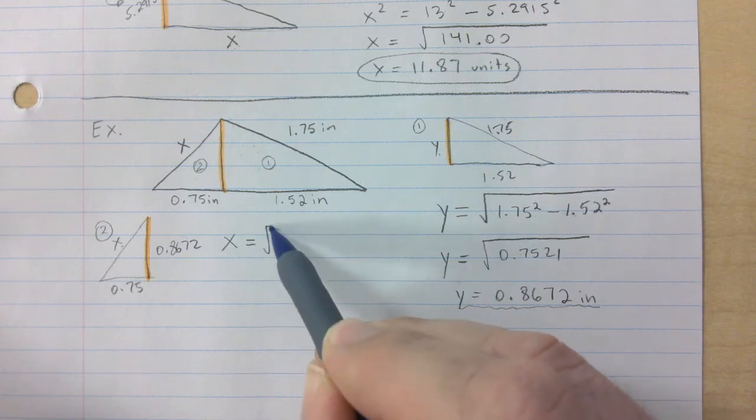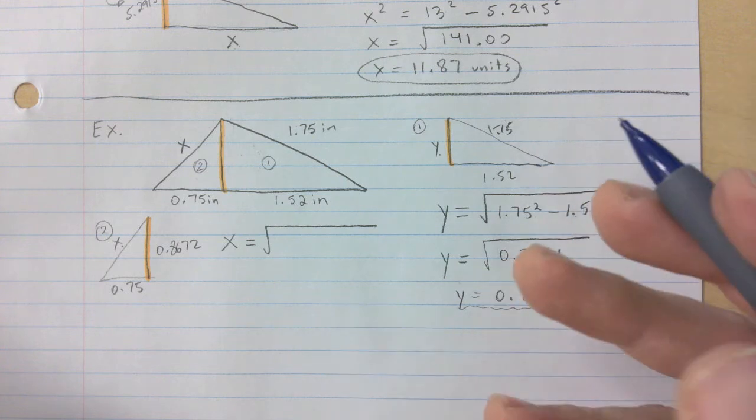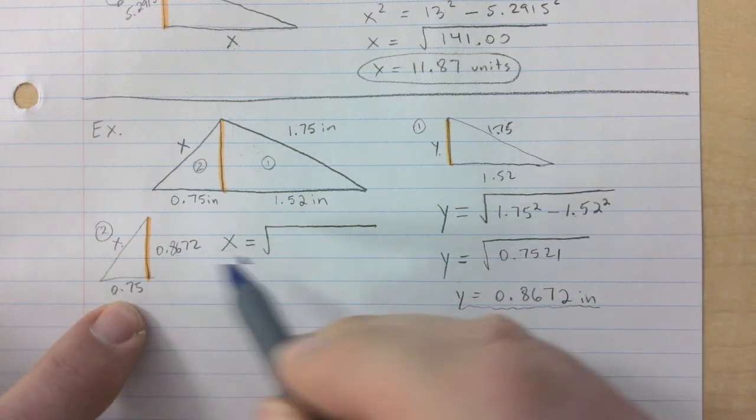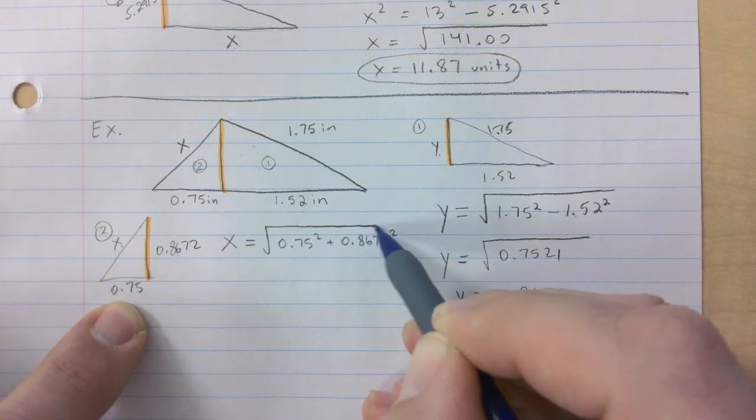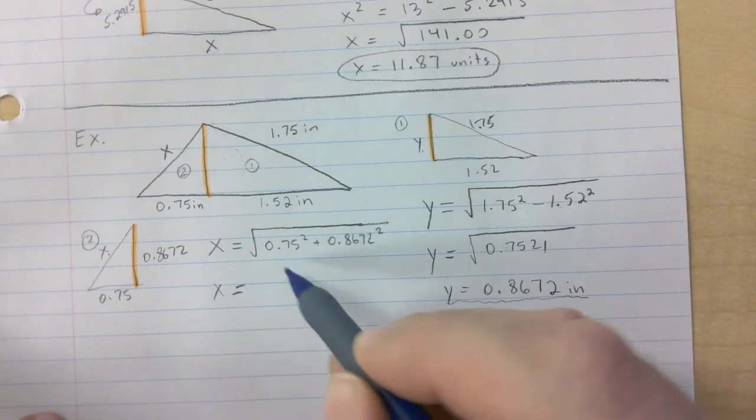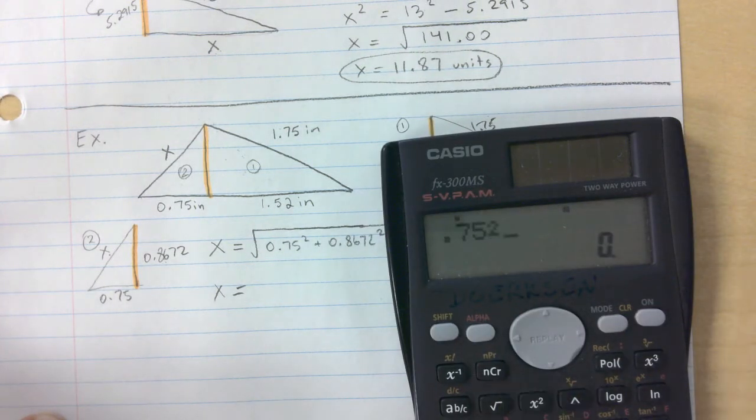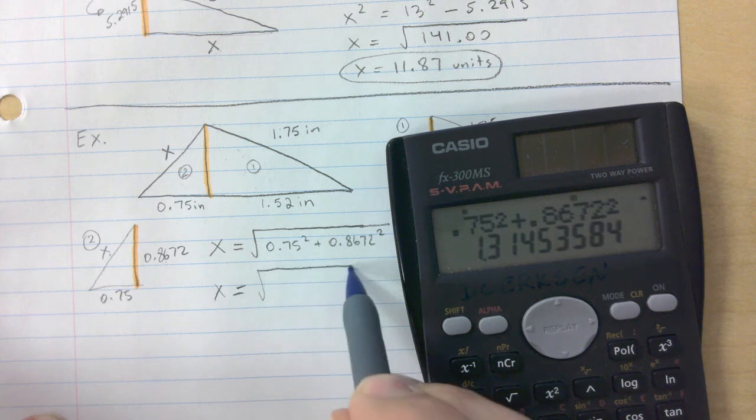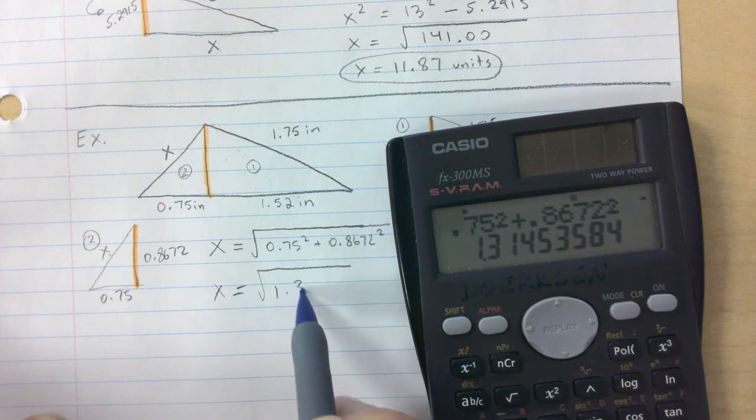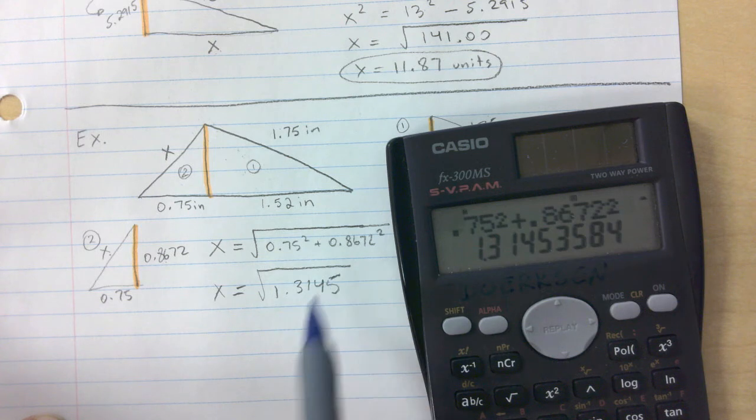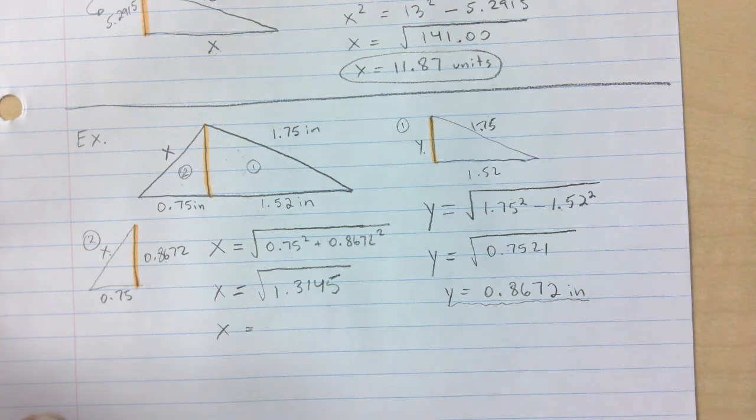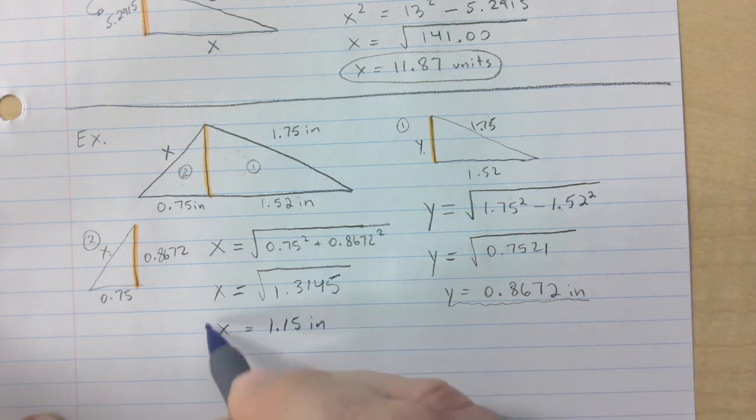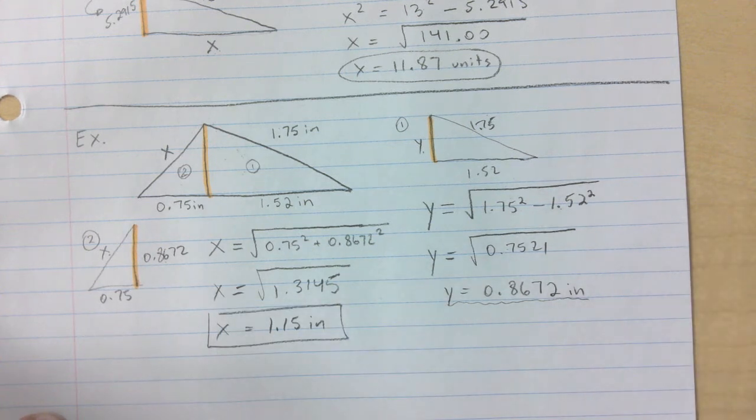Now you're gonna have to add these two, but always remember to square. So then you enter that, 0.75 squared plus 0.8672 squared. I'm gonna actually take the time just in case, 1.3145 if you want to just use four decimals. Then take the square root, don't forget that. That's 1.15, 1.15 of an inch. There's your final answer. That's how you do those types of questions.